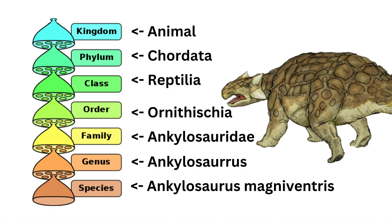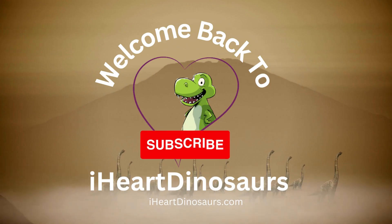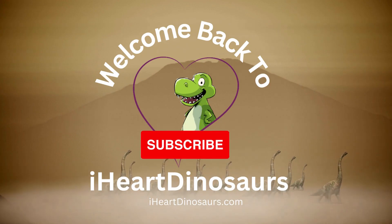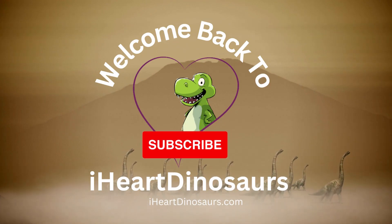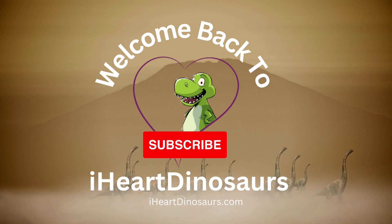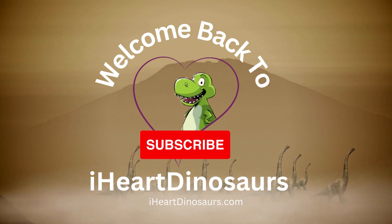Scientific classification is, put simply, a systematic way of organizing and categorizing living organisms based on their shared characteristics. This helps scientists study and communicate about different species in a clear and structured manner. Thanks for joining us, and if you enjoyed this video, don't forget to like, subscribe, and hit that notification bell.